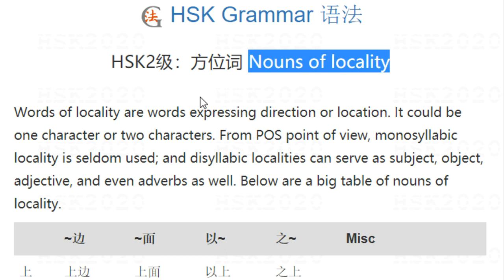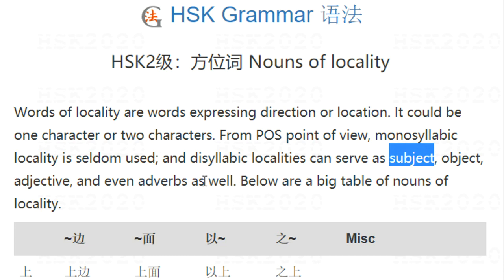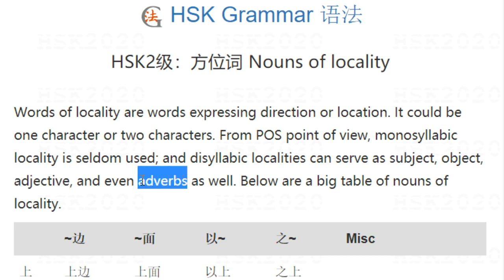Words of locality are words expressing either direction or location. They can be one character or two characters. From a part of speech point of view, monosyllabic — which is one character — is seldom used. Two-character localities often serve as subject, object, adjective, or even adverbs. We have a big table of nouns of locality here.